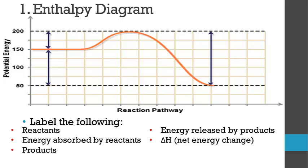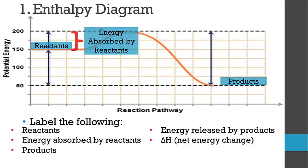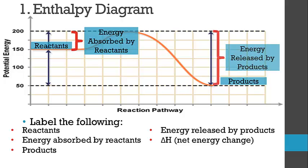The first question has us looking at an enthalpy diagram. At the beginning of the reaction pathway — the progress of the reaction — we have our reactants, and at the end of the reaction pathway are our products. Chemical reactions have two parts: a part where the reactants absorb energy, and a part where energy is released. If we want to determine if something is endothermic or exothermic, we have to look at the relative amount of energy. The energy absorbed by the reactants is the endothermic part, and the energy released by the products is the exothermic part.